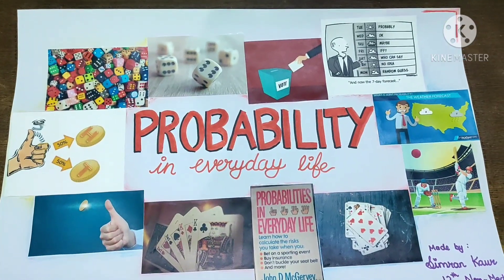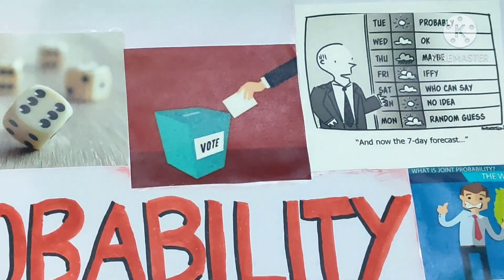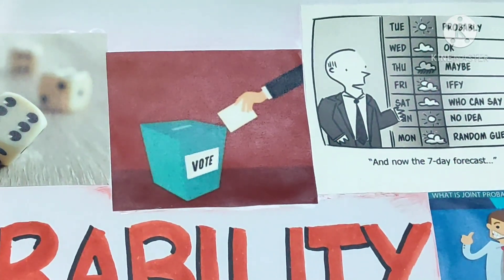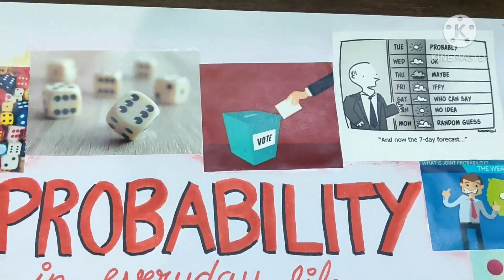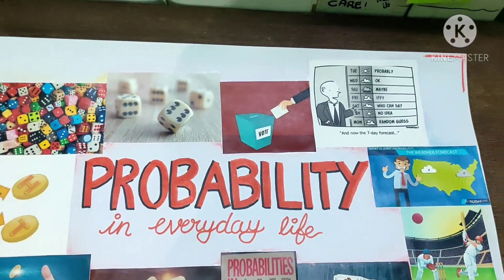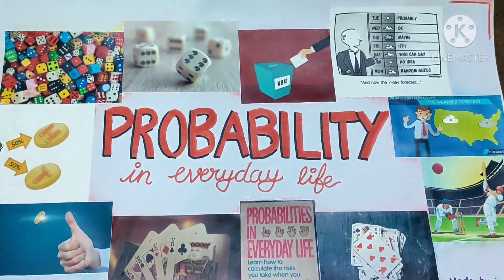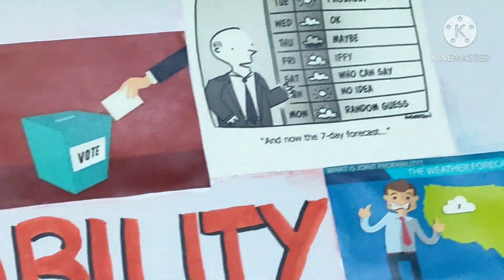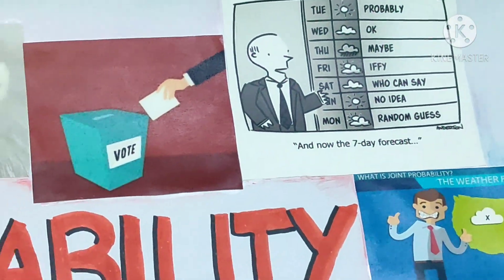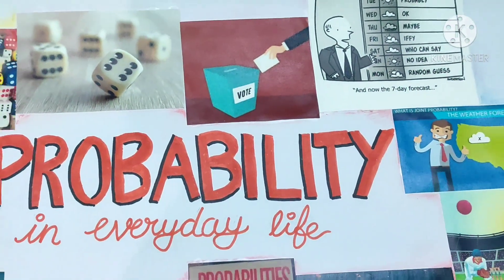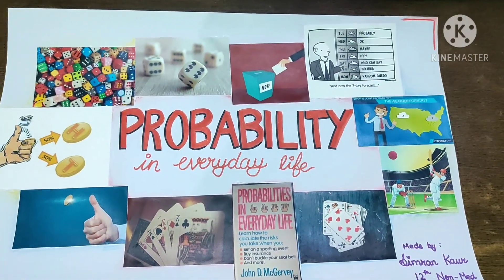Next is elections. We use a lot of estimation during elections — we estimate the chances for a party to win, so we are using probability. Next is weather forecast. Probability is used in weather forecast as well; we estimate the weather of a place, like whether it will be raining or it will be a sunny day, so we are using probability.